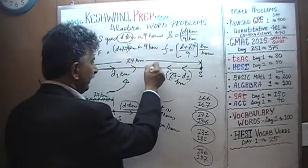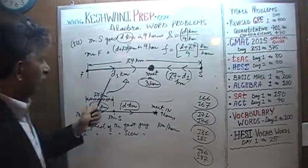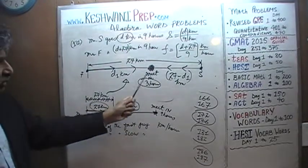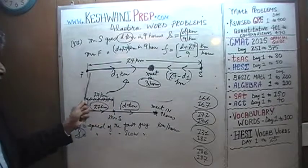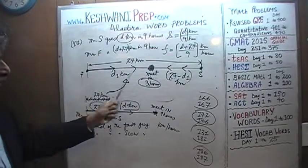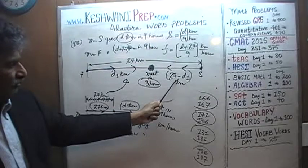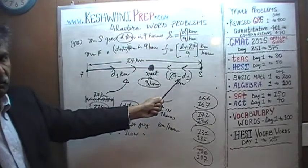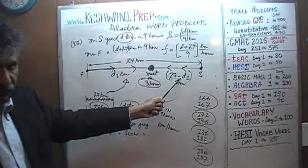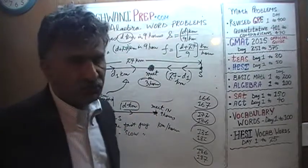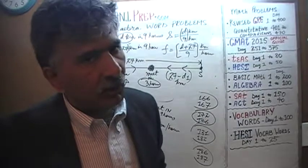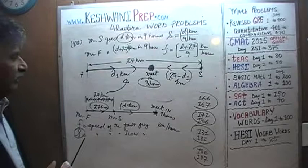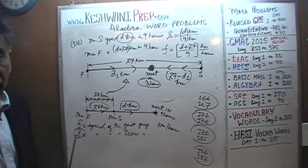Once we figure out the speed of Mr. F and the speed of Mr. S from this scenario, those two speeds have to equal the speeds from the first scenario, because they are constantly walking at the same constant pace — whether walking in the same direction or opposite directions. So we will equate the two speeds, solve for D, and once we have D, we can figure out their speeds.